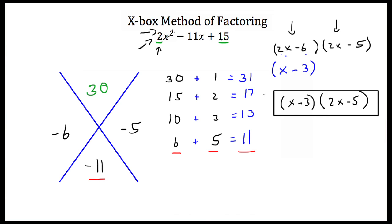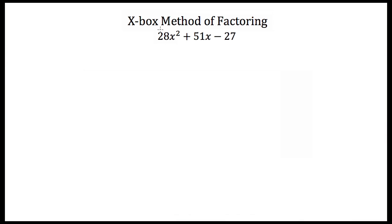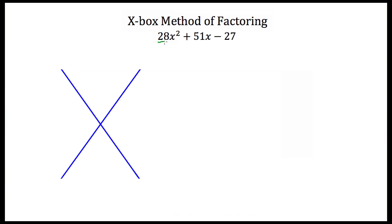Now let's try one more problem that's a little bit more challenging. Here we have 28x squared plus 51x minus 27. The leading coefficient is positive, so I don't have to worry about that. I'm looking for greatest common factors, but it doesn't appear that there are any. So I'm ready to do the Xbox method of factoring. I draw my big X. I take the coefficient of my x squared term — 28 — and my constant term, negative 27. 28 times negative 27 is negative 756. The linear coefficient, 51, goes in the bottom.